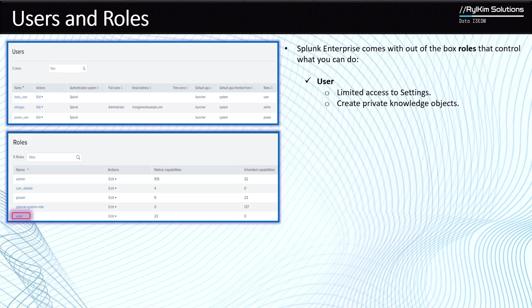The user role can only create private knowledge objects. When you have a user role, you can create your own knowledge objects but you will not have the ability to share them so that other users can see them, even though you can see what other users create. So if you have a basic user who is just starting in Splunk and is still learning, you might want to assign them the user role.